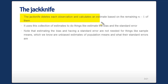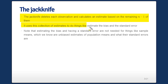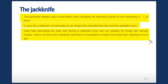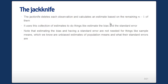The jackknife deletes each observation and calculates an estimate based on the remaining n minus 1 of them, then uses these estimates to do bias and standard error calculations. We don't have to do these things for sample means, because we know they're unbiased and we know what their standard errors are. But for other estimators, it might be useful.